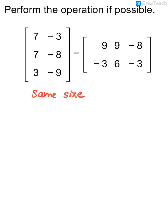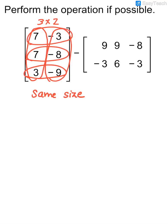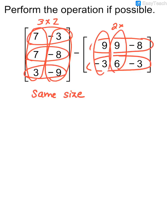If I look at these two matrices, the first matrix has three rows and two columns, so we would say its size is three by two. The second matrix has two rows and three columns, so I would say its size is two by three. So because they are not the same size, it is not possible to actually subtract these two matrices.